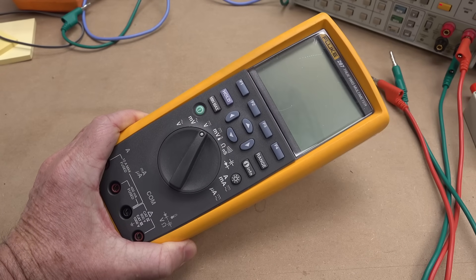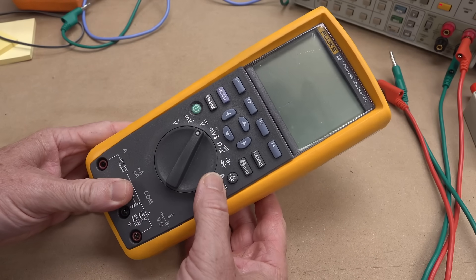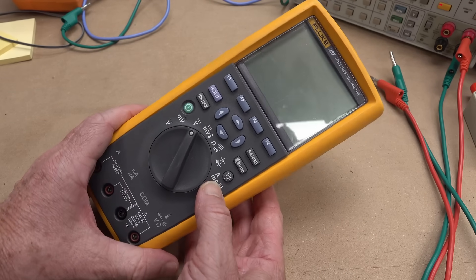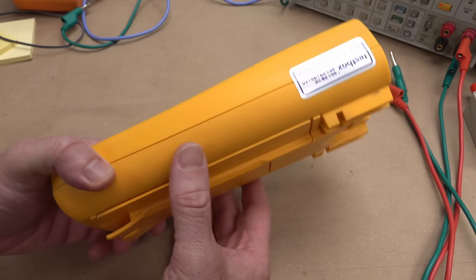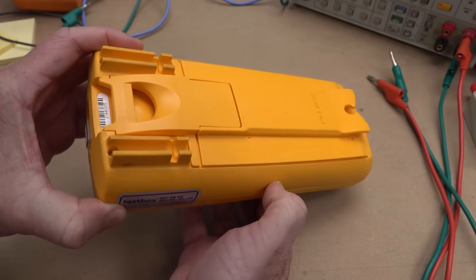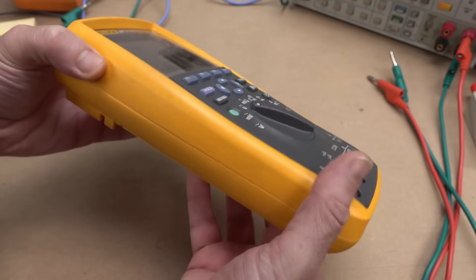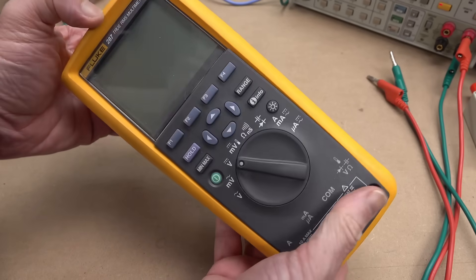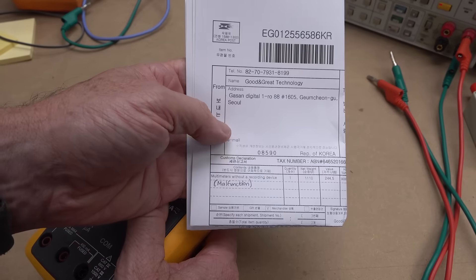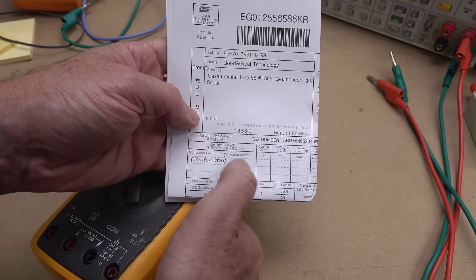Hi, it's potential repair video time. I picked up this Fluke 287 at a quite reasonable price because it was advertised as faulty. It was malfunctioning. I wasn't quite sure what type of fault it actually was, but it said it's malfunctioning. It comes from good and great technology and it's a multimeter without a recording device.